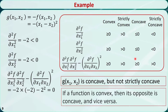Actually, we don't have to go through all this trouble because if a function is convex, then its opposite is concave, and vice versa. In this video, I talked about the Hessian matrix, positive semi-definite matrix, negative semi-definite matrix, and convex and concave functions. Thanks for watching.